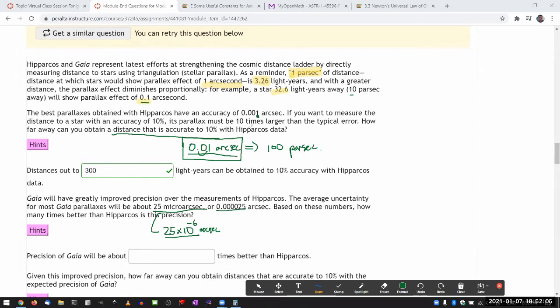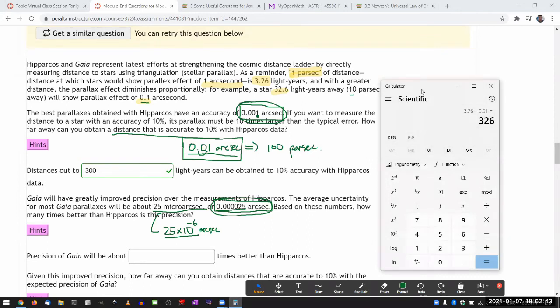Well, with Hipparchus, I have this as the typical error, or I guess the smallest amount of error. And this is the typical error. And if you open the hint, the hint will remind you that when it comes to precision, smaller is better. So in terms of how many times is this better, what I should do is take this number and divide it by this number. That will tell me how much more precise Gaia will be than Hipparchus. So let me take 0.001 divided by 0.000025. So 40 times.